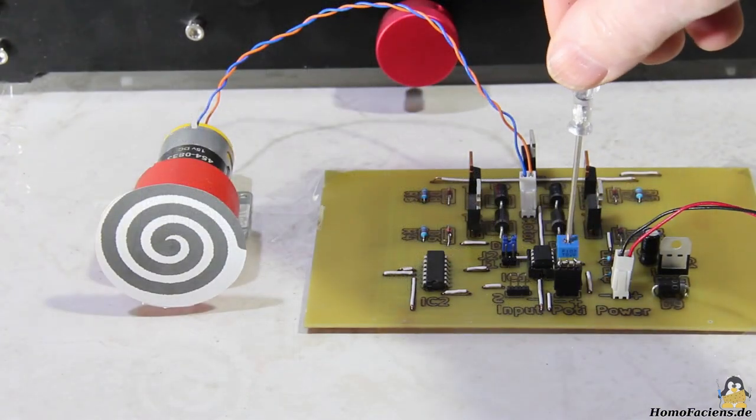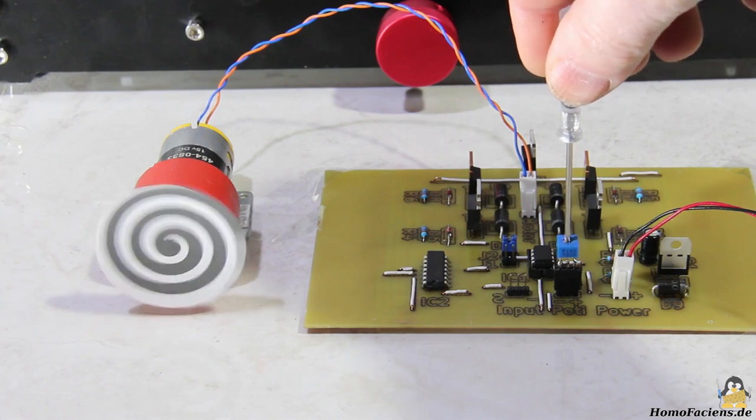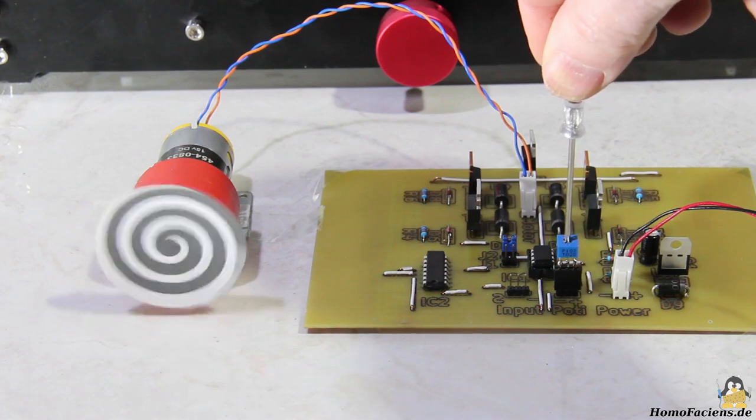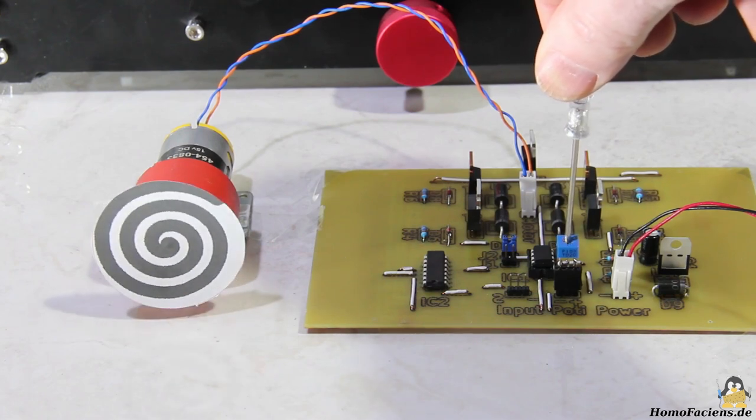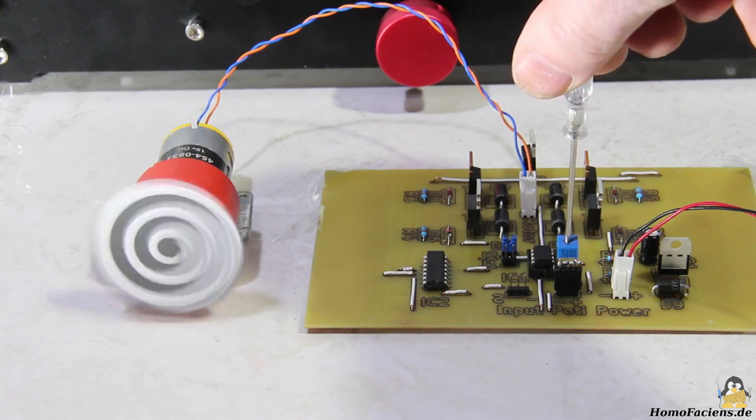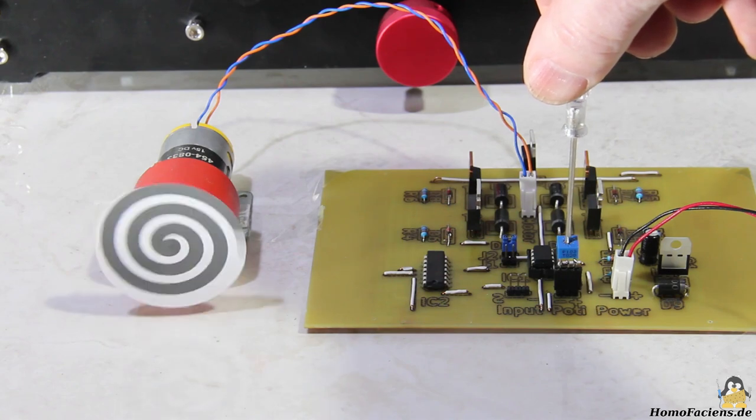The soldering worked without any problems and the final result looks like this. It is an H-bridge that is controlled by a tiny 85 microcontroller. The microcontroller can receive commands via an interface in the form of pulse width signals or, as can be seen here, read the voltage on a potentiometer.